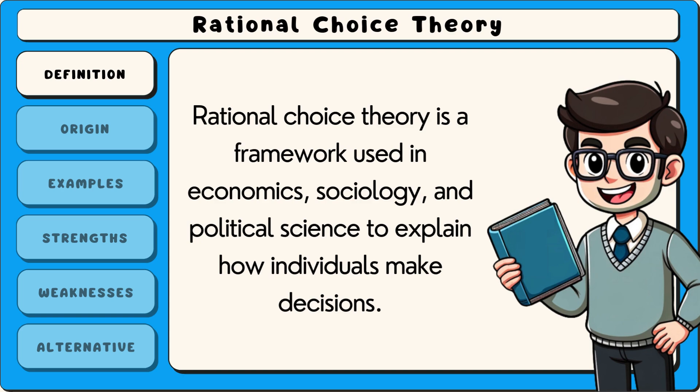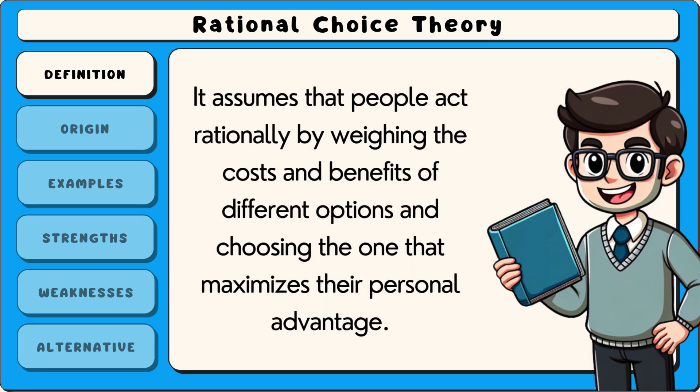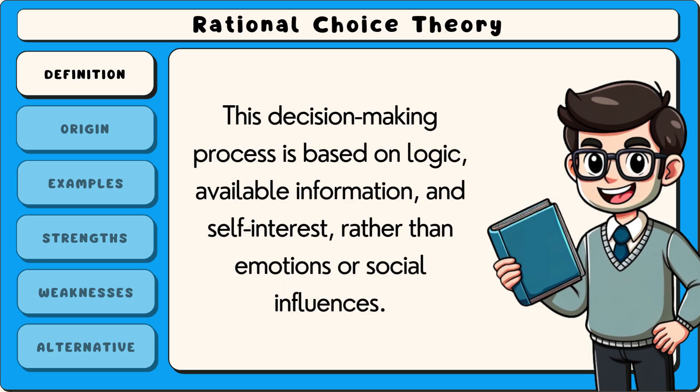Rational choice theory is a framework used in economics, sociology and political science to explain how individuals make decisions. It assumes that people act rationally by weighing the costs and benefits of different options and choosing the one that maximises their personal advantage. This decision-making process is based on logic, available information and self-interest rather than emotions or social influences.